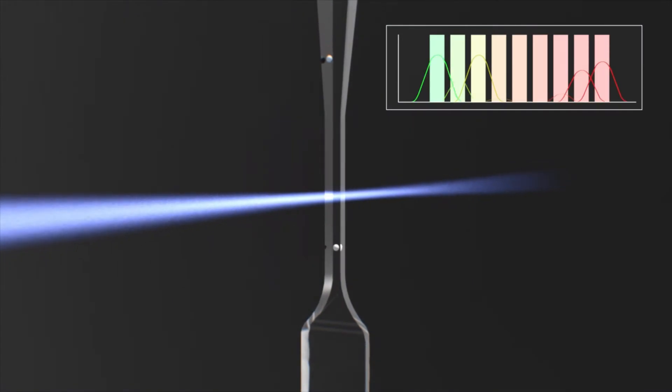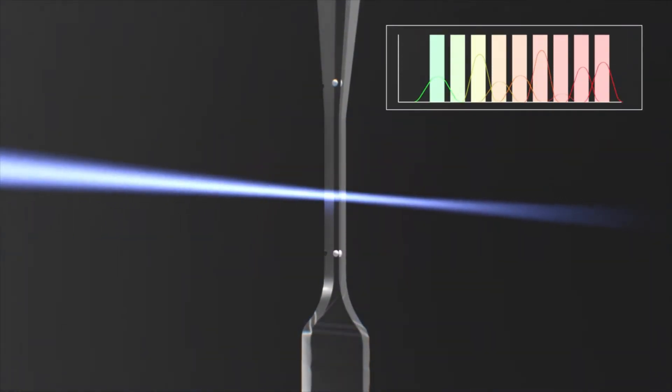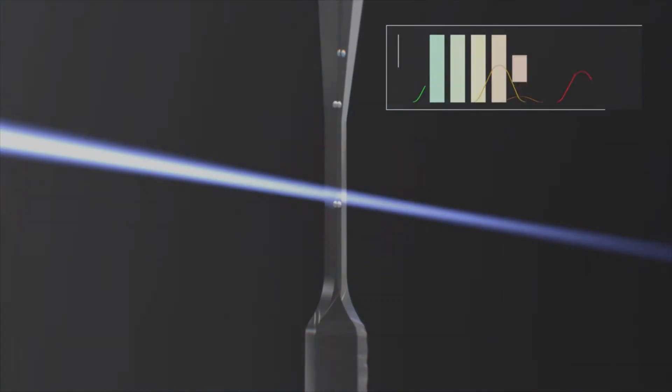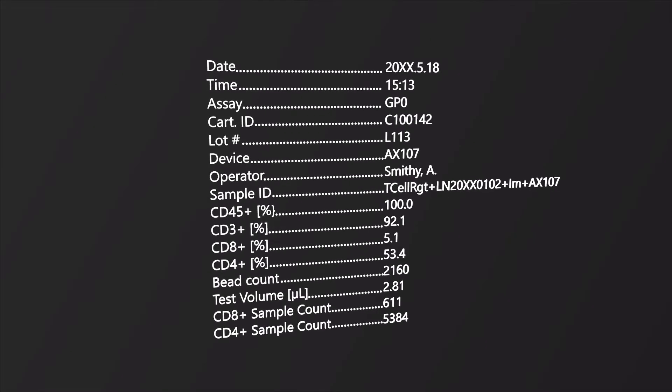Forward scatter and nine fluorescent channels are collected every 10 microseconds, yielding over a gigabyte of data which is then processed into an easy to read report.